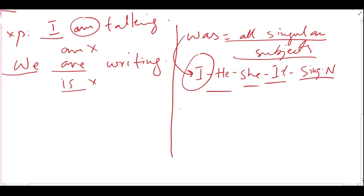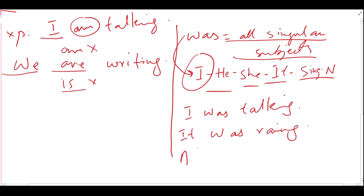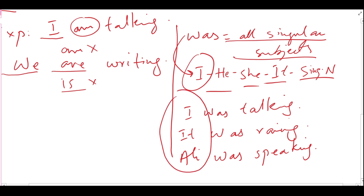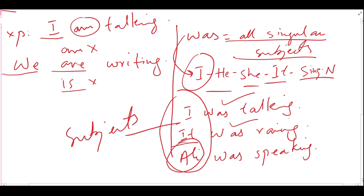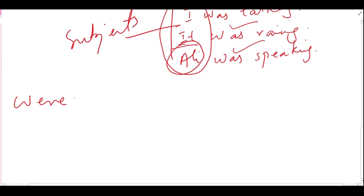For example, we can say 'I was talking,' 'It was running,' and 'Ali was speaking.' You can see that according to the subjects, we select the helping verb: with I we use was, with it we use was, and with Ali — a singular noun — we also use was.